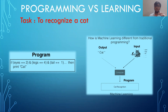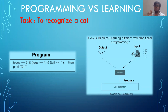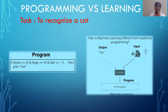Instead, you give the kid a picture of a cat and tell him this is how a cat looks. The kid will by default recognize the eyes, the legs, the tail. The same procedure is applied to machine learning — you show a cat image with a 'cat' label to the machine learning algorithm, and the machine will learn by itself how a cat's eyes look or how the tail looks.